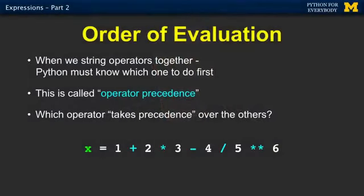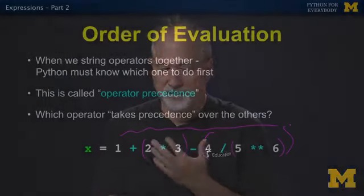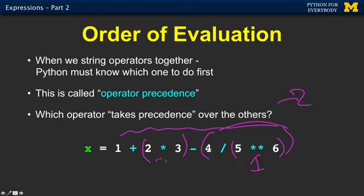Now, these also have an order of evaluation. In mathematics, there's order of evaluation. There are some operators that are more powerful than other operators, and you can always just put parentheses in. And most programmers always put parentheses in. So if I was writing this line of code and I wanted to be friendly to you so that you could read it more easily, I would simply put the parentheses in for you. So I'd say 5 to the sixth power goes first, then this 4 divided by that goes next, then this 2 times 3 goes next, and then we evaluate the rest of these things left to right.